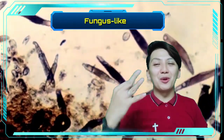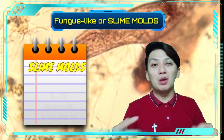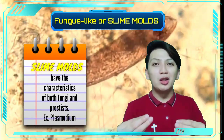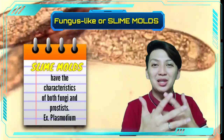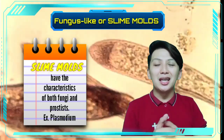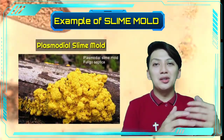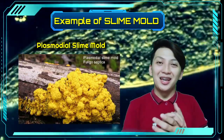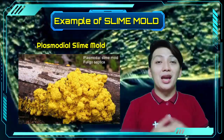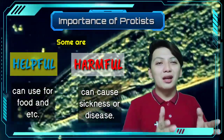The third group of protists is what we call fungi-like or fungus-like protists, also known as slime molds. They are basically a combination of fungi and protists. Usually you can see them in wet areas, dark areas of the forest, or wet streets. That is all about protists. Take note: some protists are very helpful and some of them are very harmful.